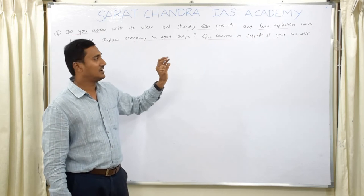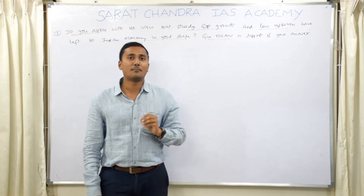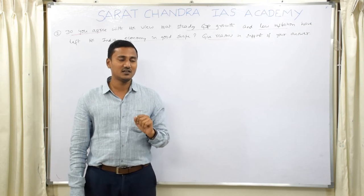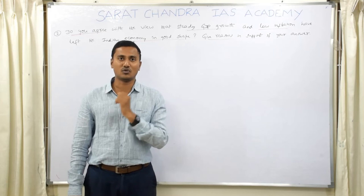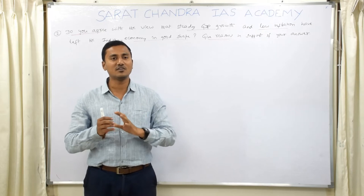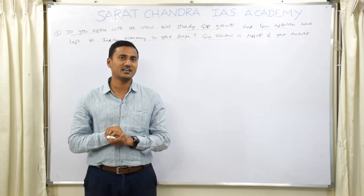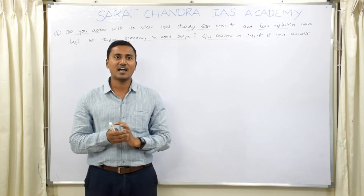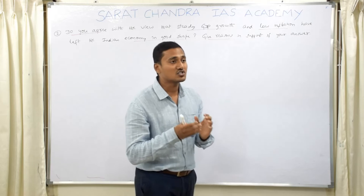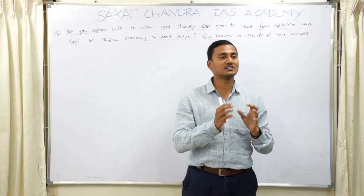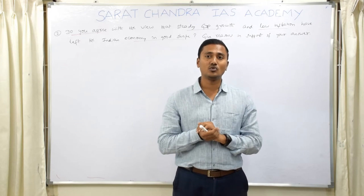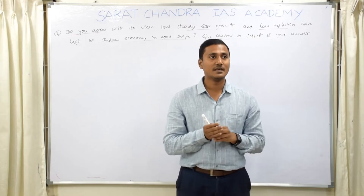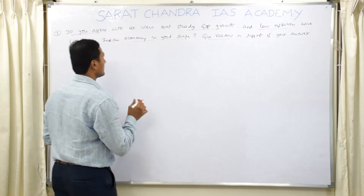For these kinds of questions, my suggestion is: never say you agree and write only one side, and never say you disagree and write only one side. It is always safer and better to say 'I partially agree with this statement.' When you say you partially agree, you have scope to tell what you agree with and also what you disagree with. So in this answer, start with an introduction of maybe three to four lines about something related to both GDP and low inflation.